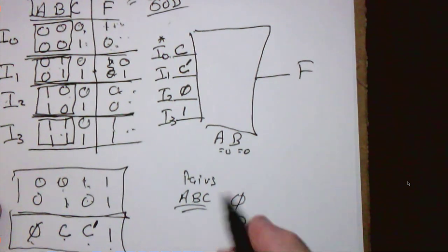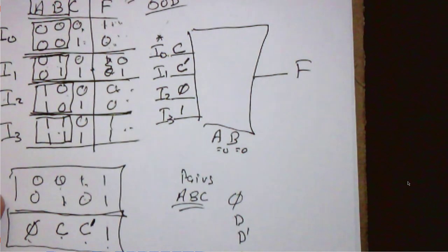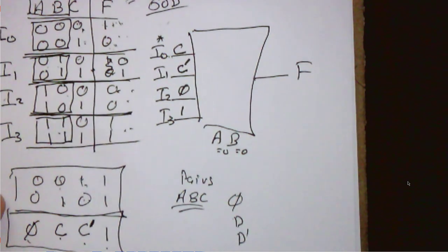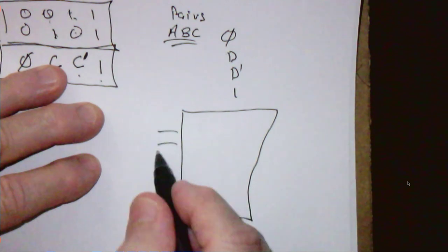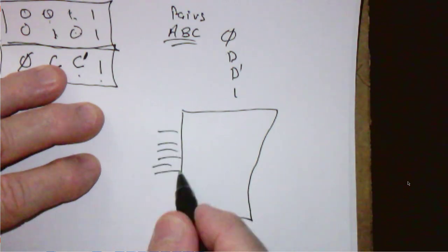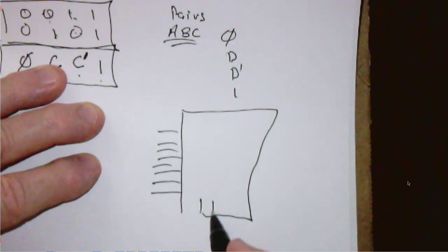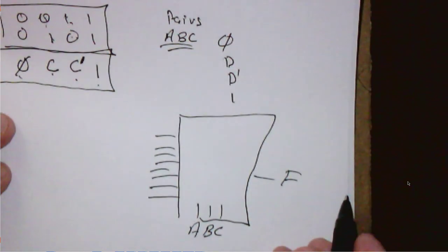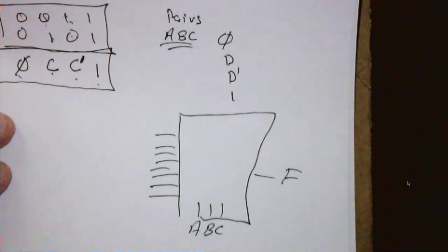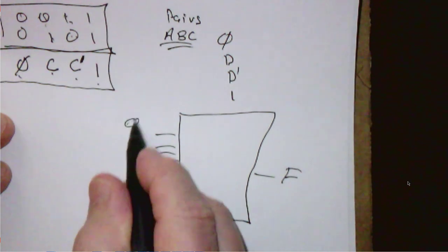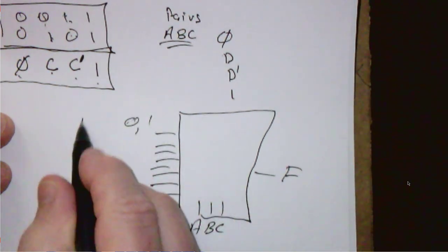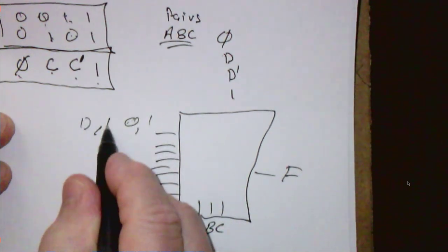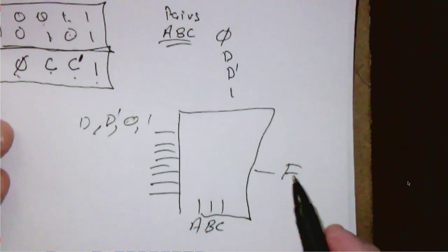An 8-to-1 mux is going to have 8 inputs, 3 control lines A, B, C, and an output F. We just look at the pairs of rows and we're going to either put in a 0, a 1, a D, or a D-prime — those are the only possibilities. The book gives you this business of circling groupings on the truth table — don't do it. It's very confusing and not helpful. It's much more helpful to just write out the truth table, divide it up into pairs of rows two rows each, and figure out what to assign.